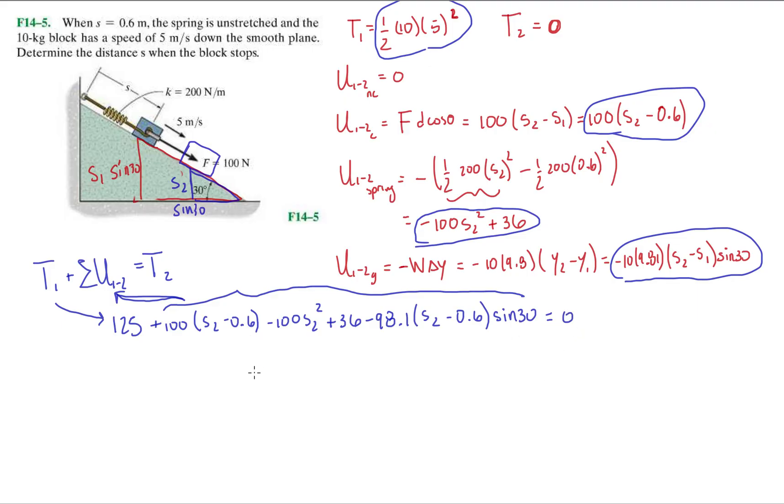Okay. Cleaning this up a bit. Right. We're going to get 125 plus 100 S2 minus 60 minus 100 S2 squared plus 36 minus 49.05 S2. And then, plus minus minus 29.43. Equals 0. Okay. At this point, it's just algebra.